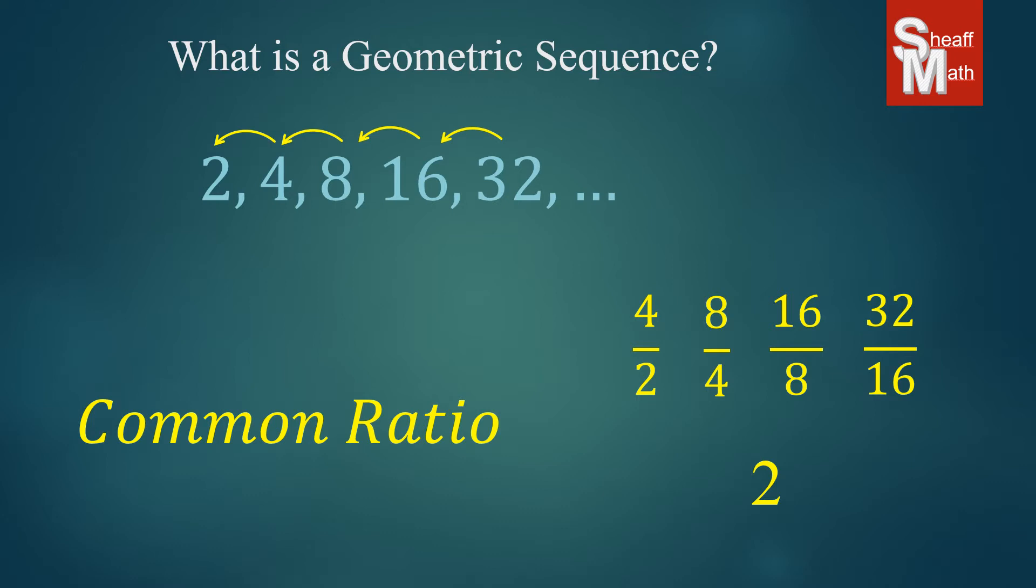So when you find the common ratio, that's the number that's multiplied to get the next number.